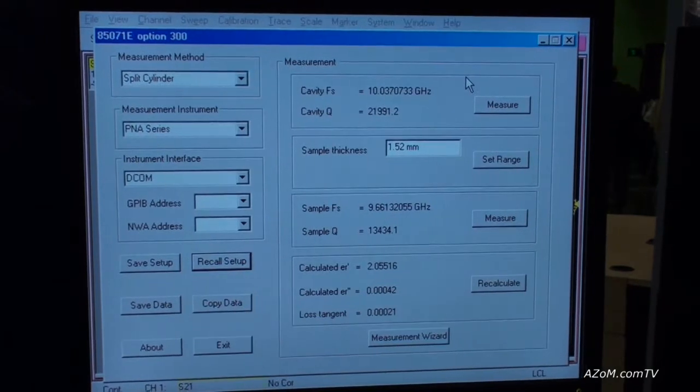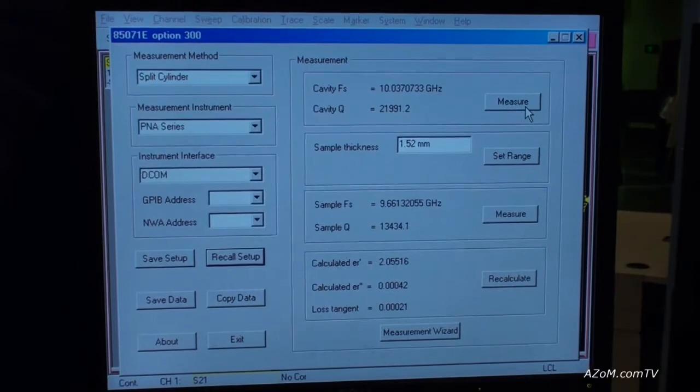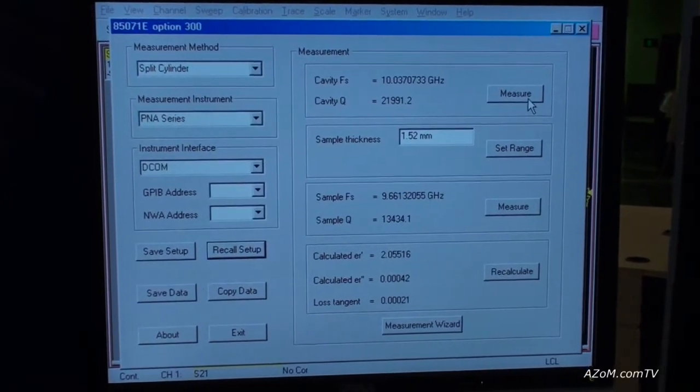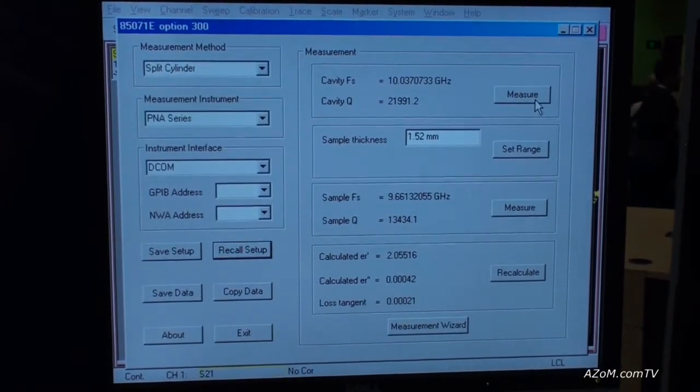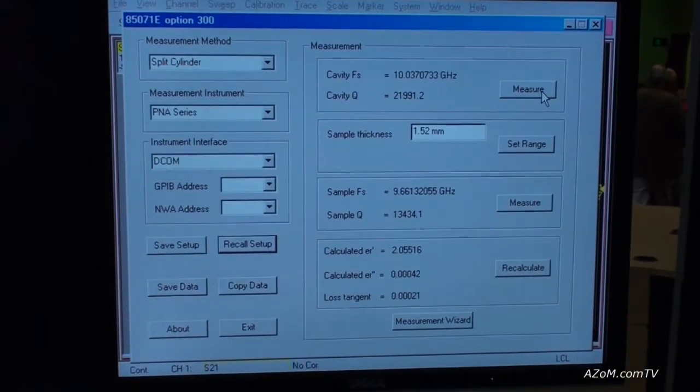I've made a measurement here. The first step is to measure the fixture closed. So we have a frequency close to 10 gigahertz and a Q, which is quality factor, over 20,000.